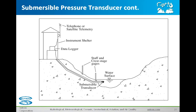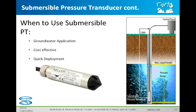More often, pressure transducers are used in groundwater applications where you have a pipe going down into the aquifer. It's very simple to drop a pressure transducer down into this tube into the aquifer, and you get very good data in this way. They're cost effective — the sensors themselves are not that expensive compared to some other solutions — and they're quick and easy to deploy.